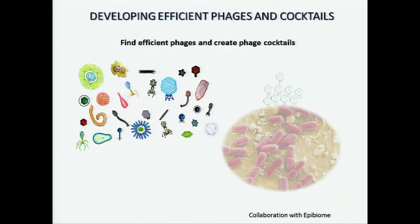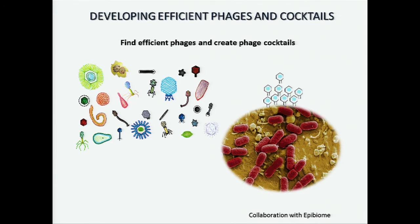These issues are not insurmountable, because there are many phages out there — if we have an inefficient one, we can try to find an efficient one. Also, to reduce the risk of pathogens developing resistance to phage, we use what we call phage cocktails. Instead of using just one type of phage, we use many, so that if the pathogen develops resistance against one type, we have others that can still eradicate it.